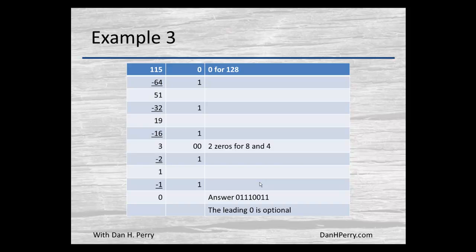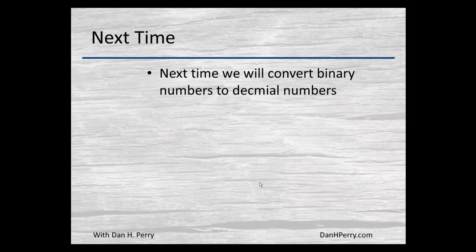So we bring down two zeros. It will go into 2, so we bring down a 1 there. Subtracting off the 2 gives us a 1 for the final 1 in the least significant bit. We end up with an answer of 01110011.